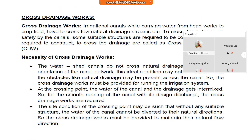What is the necessity of cross drainage works? The watershed canals do not cross natural drainages, but in actual orientation of the canal network this ideal condition may not be available, and obstacles like natural drainage may be present across the canal. So the cross drainage works must be provided for running the irrigation system.